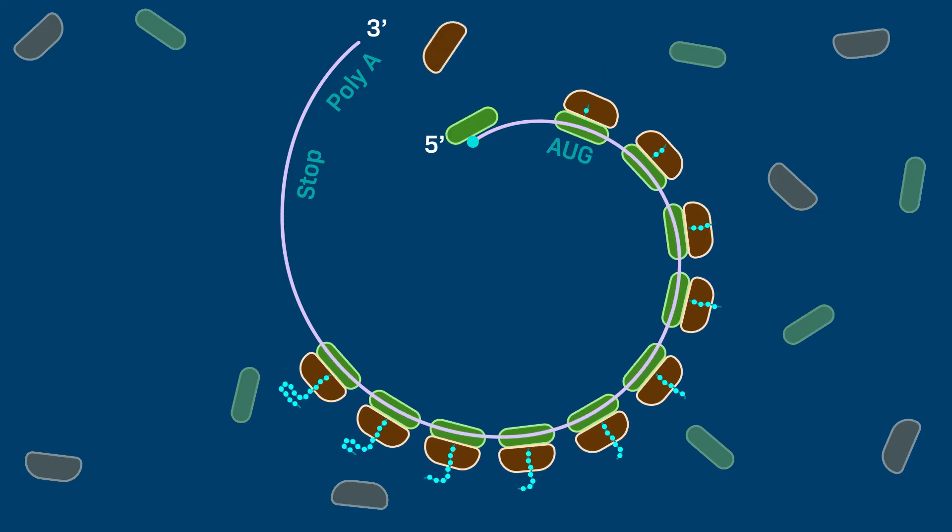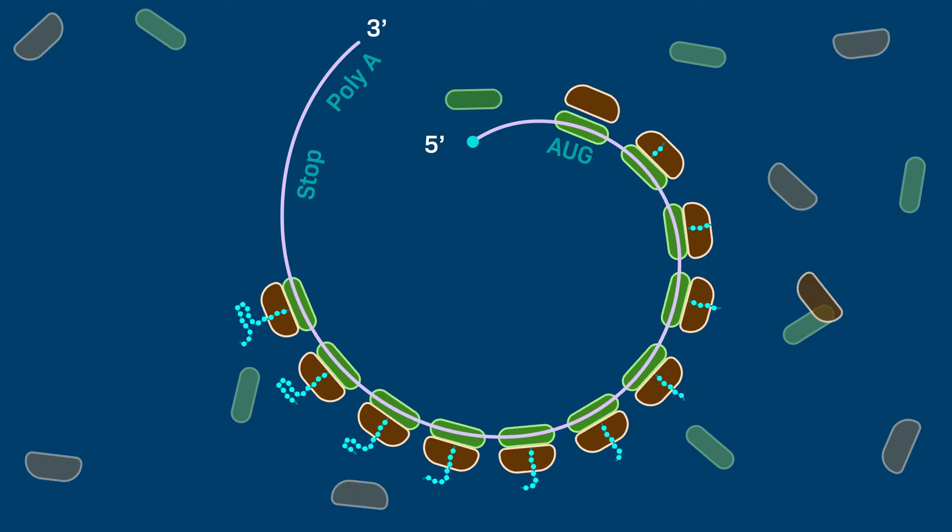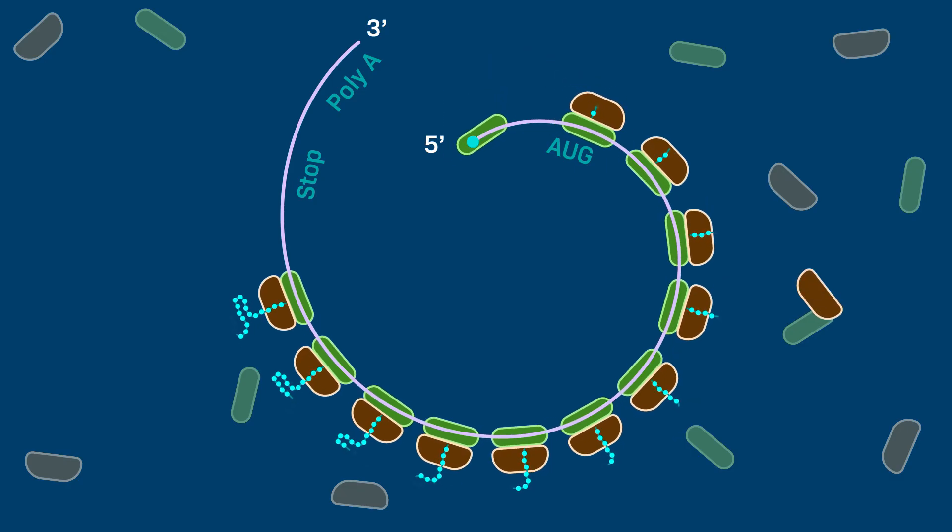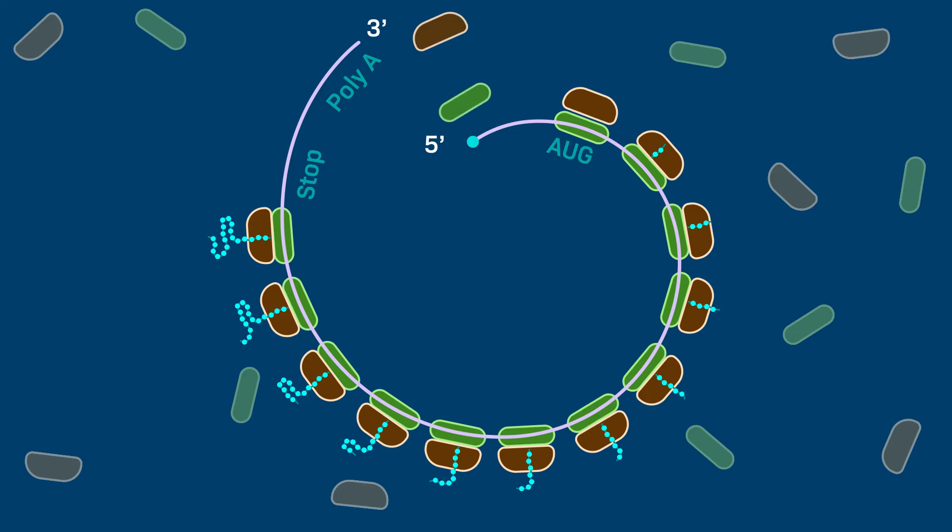These multiple initiations allow the cell to make much more protein from a single message than if one ribosome had to complete the task before another could begin.